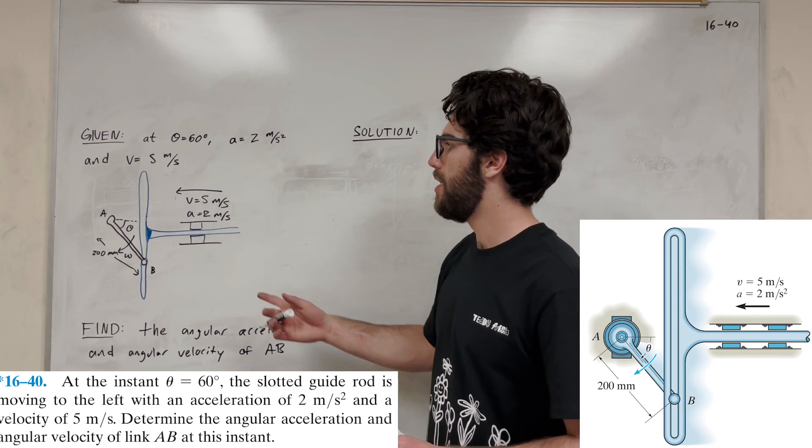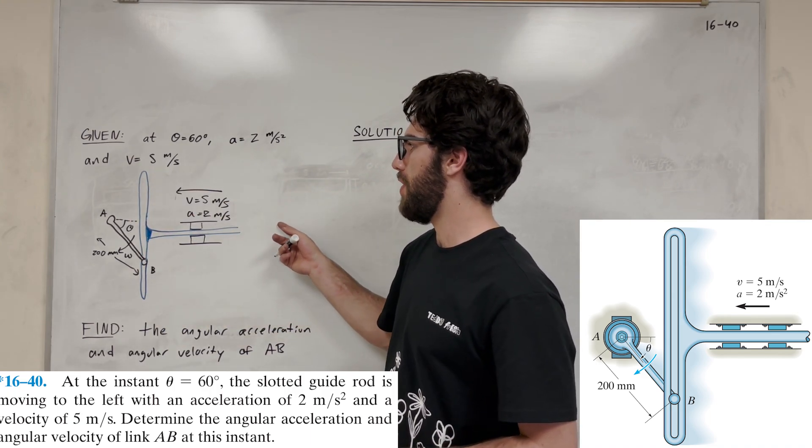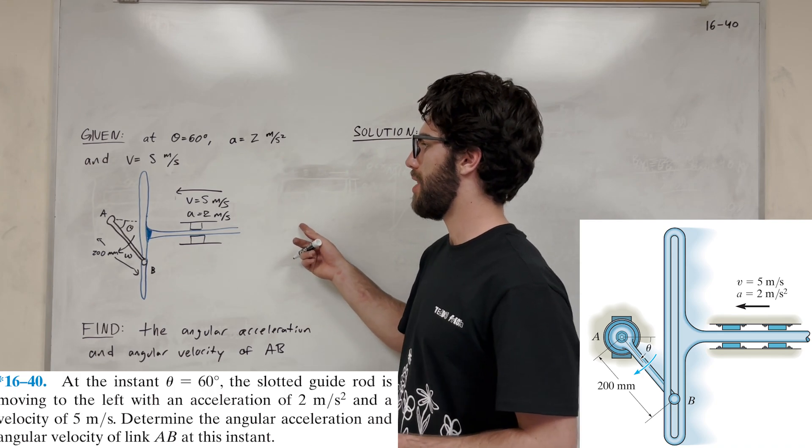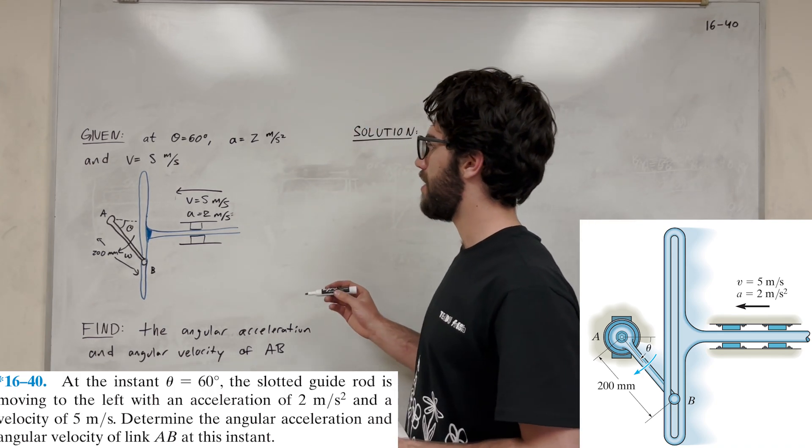So we've got this kind of complicated thing going on here. First of all, we have this whole blue area, right? It's connected here, and it's moving to the left 5 meters a second with an acceleration of 2 meters a second squared. And add that little 2 in there.